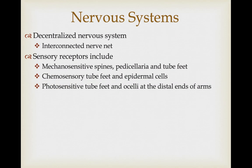Given the lack of cephalization, it shouldn't be surprising that they have a decentralized nervous system — basically an interconnected nerve net. But they do have a surprisingly complex series of sensory receptors, including mechanosensory spines, pedicellaria, and tube feet. They also have chemosensory abilities associated with tube feet and epidermal cells, and even photosensitive tube feet and ocelli at the distal tips of their arms.